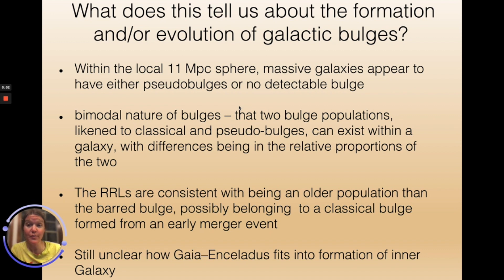So what does this tell us about the formation and evolution of galactic bulges? Well, within the local 11 megaparsec sphere, massive galaxies such as the Milky Way appear to have either pseudobulges, which we believe come from disk instabilities, or no detectable bulge. Bulges that come from merging events tend to give rise to spherical, classical-like bulges, but these are not very common in massive Milky Way-like galaxies. This is curious because Lambda CDM predicts that lots of merging events should have happened in the early history of the universe, and so there should be lots of galaxies that show classical bulges.